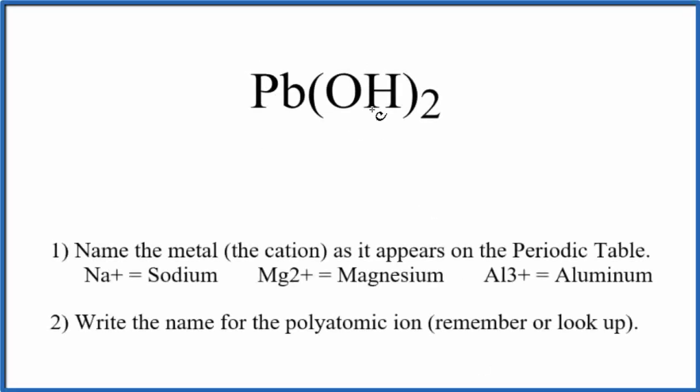To write the name for Pb(OH)2, first we need to recognize that OH here is a polyatomic ion. When OH is bonded to a metal, it's called the hydroxide ion.